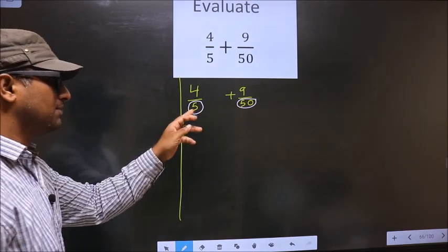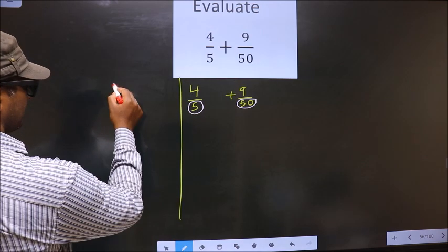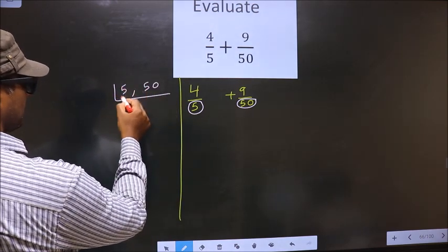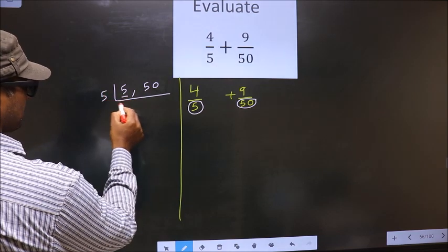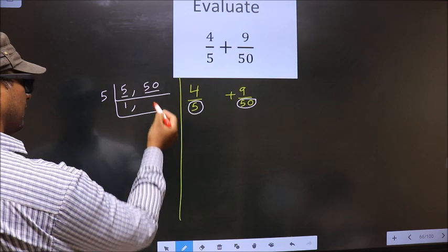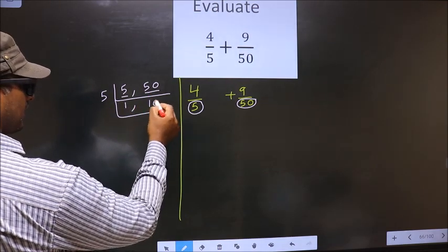So the LCM of 5 and 50. The first number is 5. 5 is the prime number. So 5 once 5. The other number is 50. When do we get 15? 5 table. 5 tens 50.